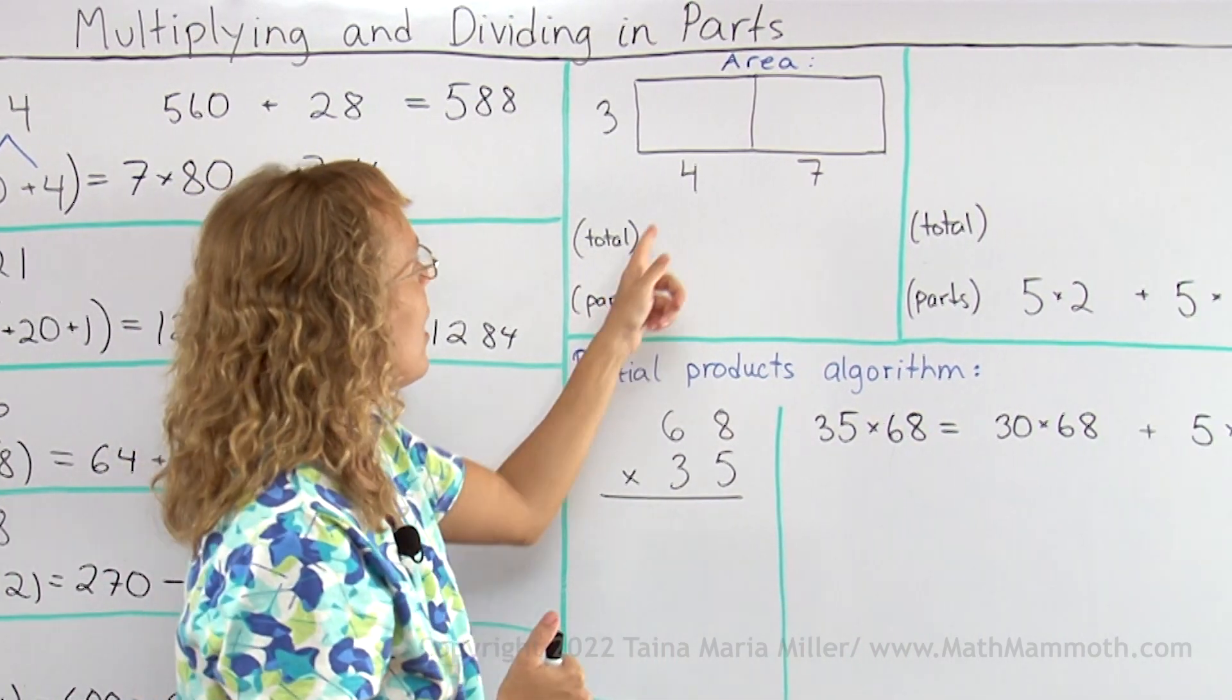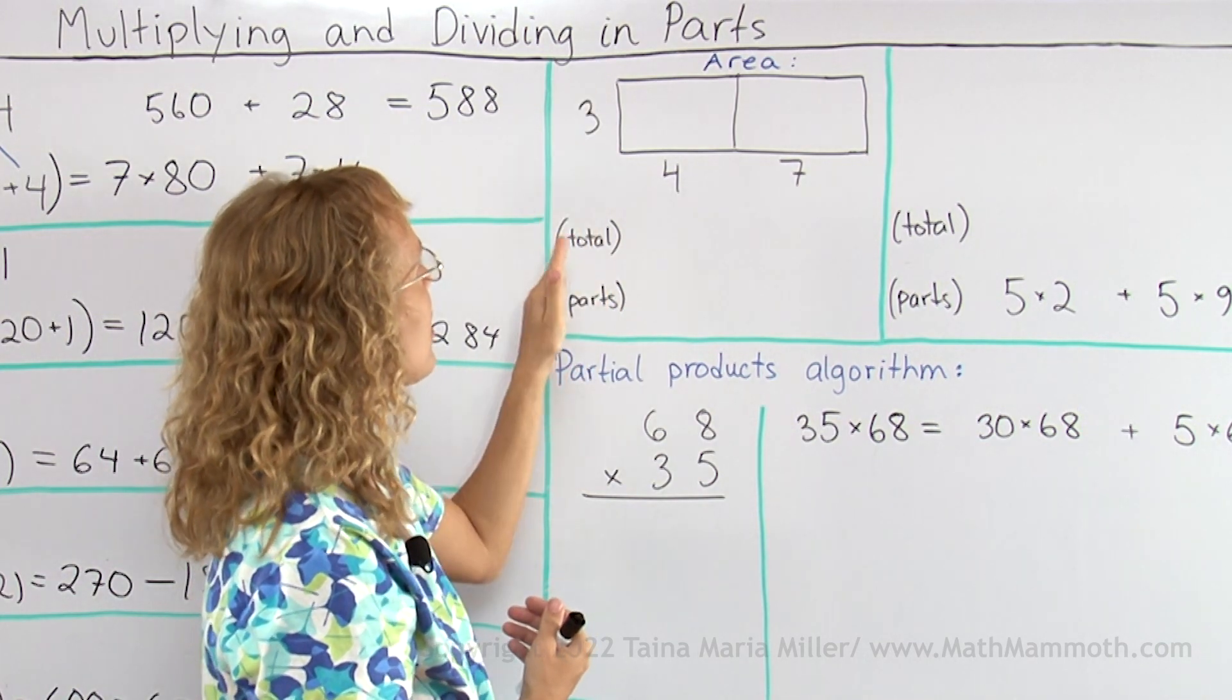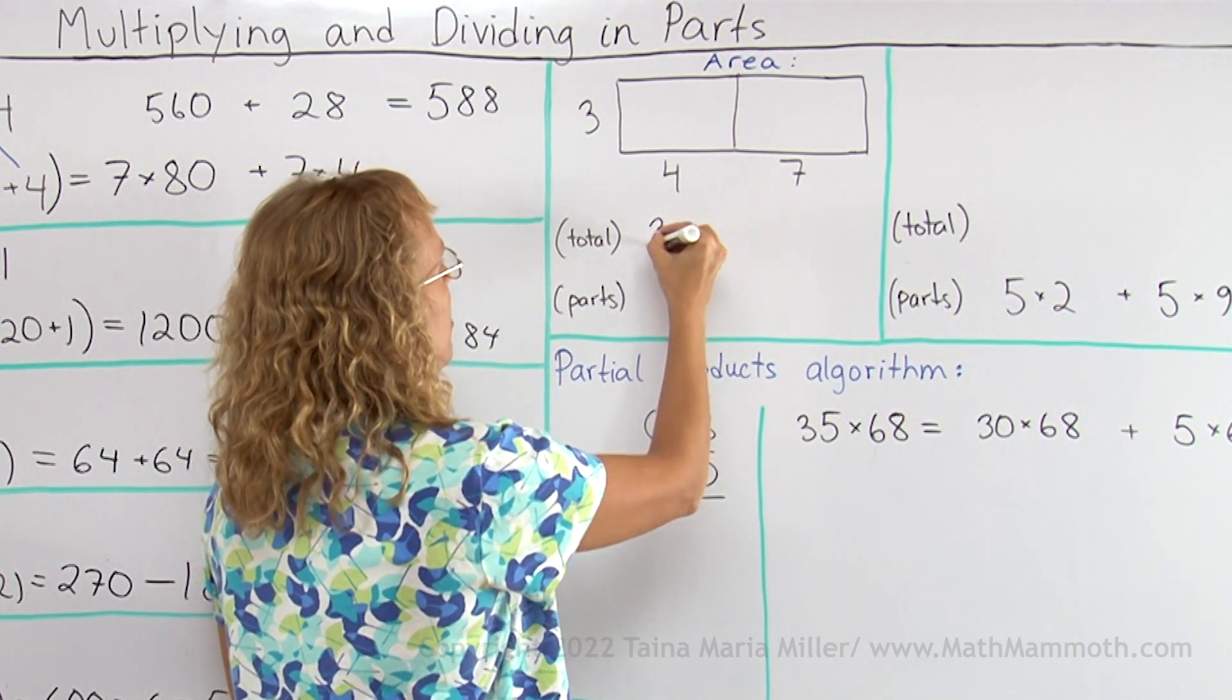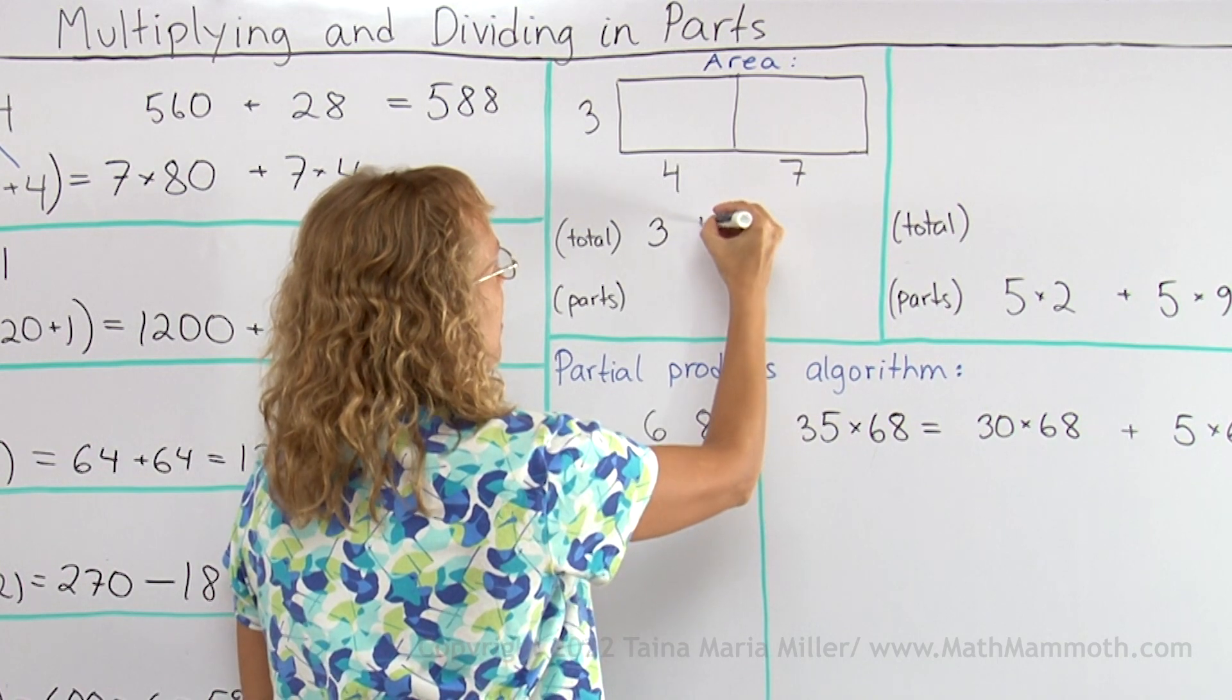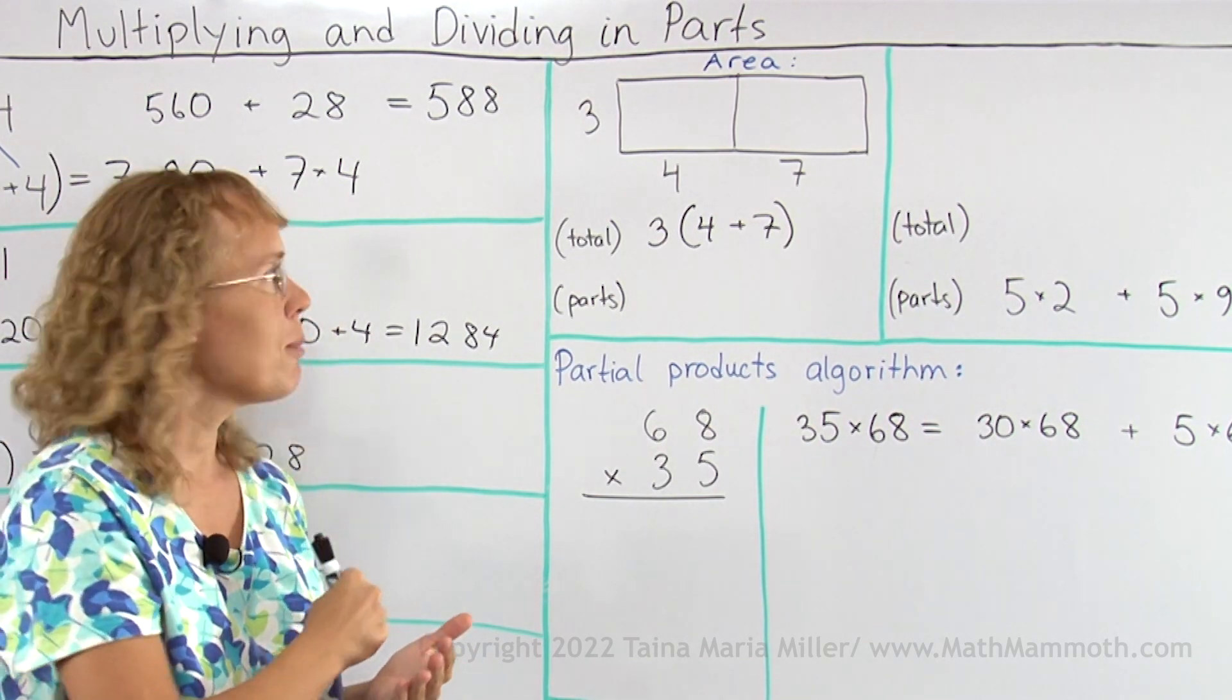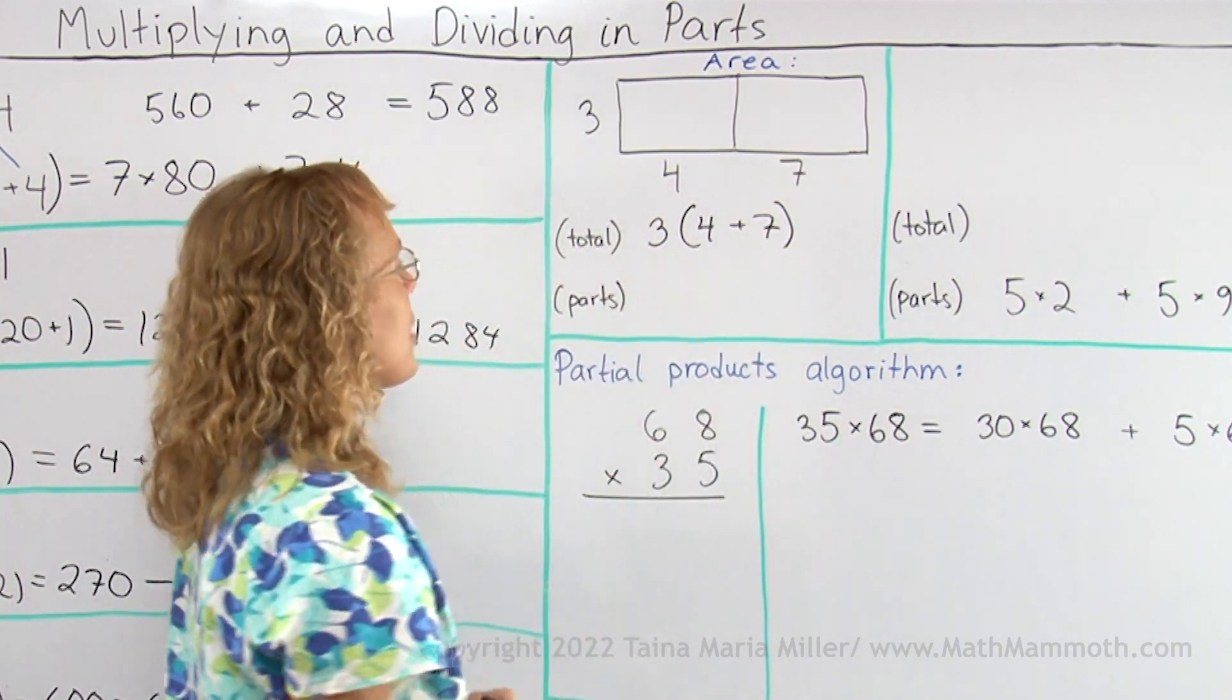But here I have a rectangle that's broken into two rectangles. The whole rectangle, the total area of the whole rectangle is this side times that side, right? Let me write it as 3 times and then this as a sum, this side as 4 plus 7. I need parenthesis though. So this is actually a multiplication of 3 times this side, right? 3 times 4 plus 7 and this side is written as a sum, 4 plus 7.